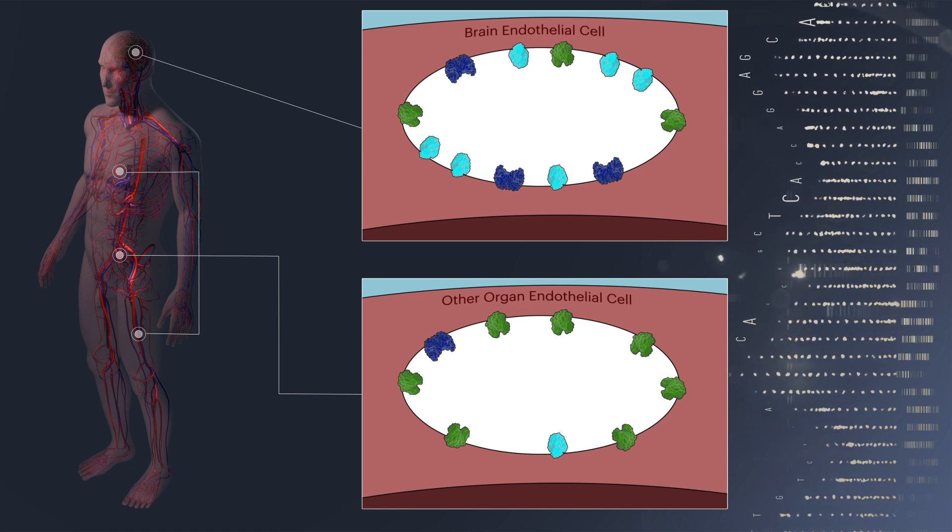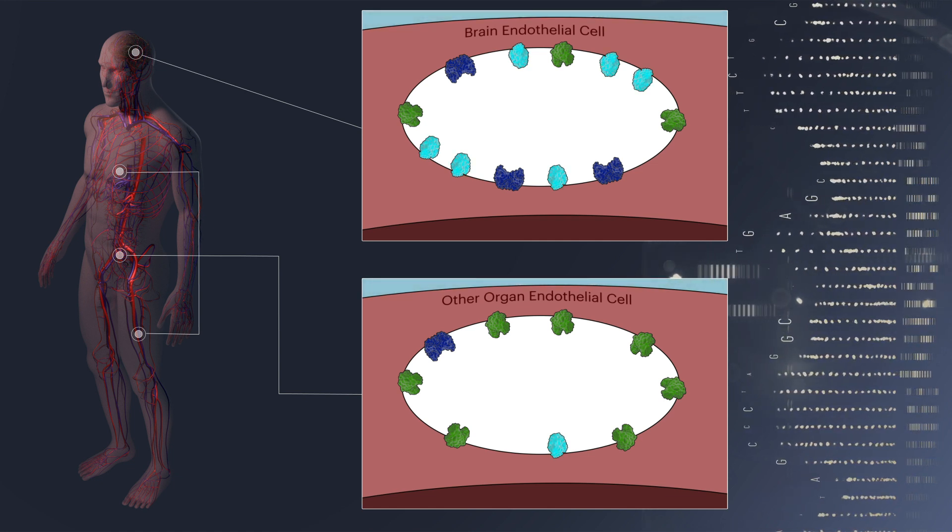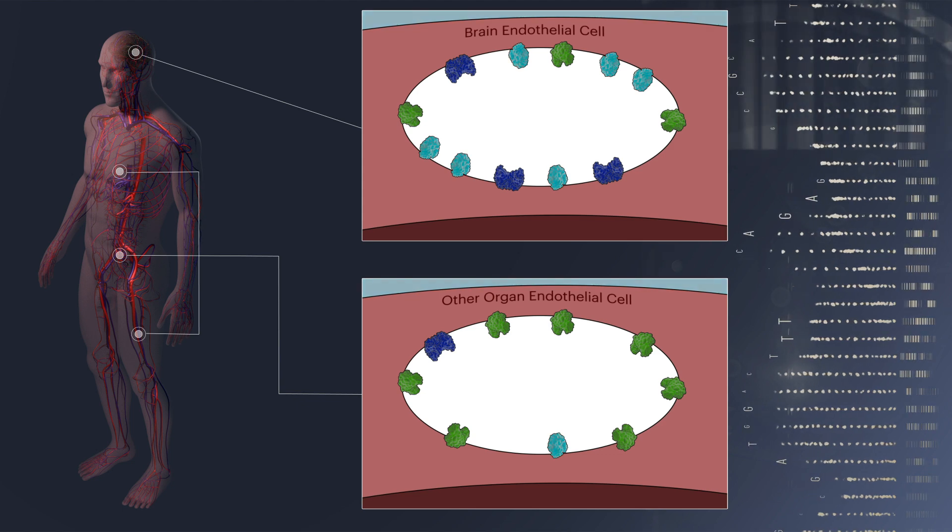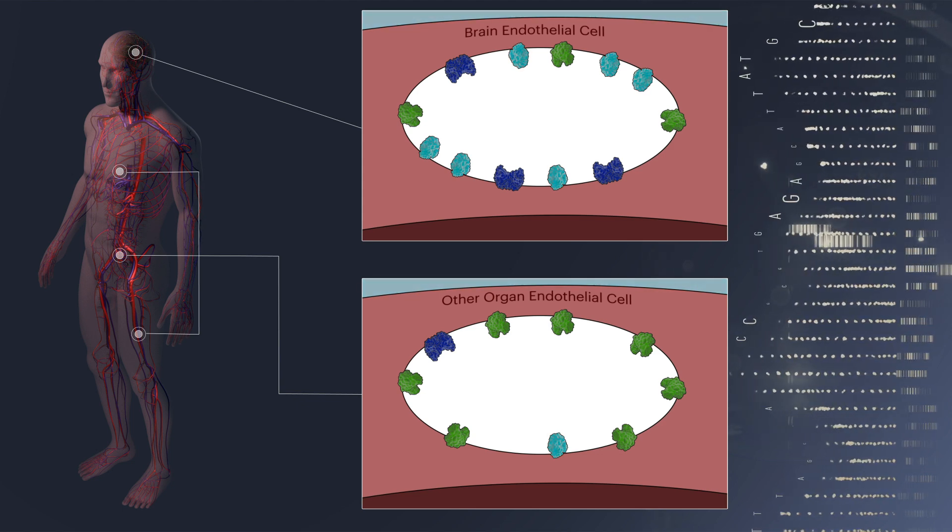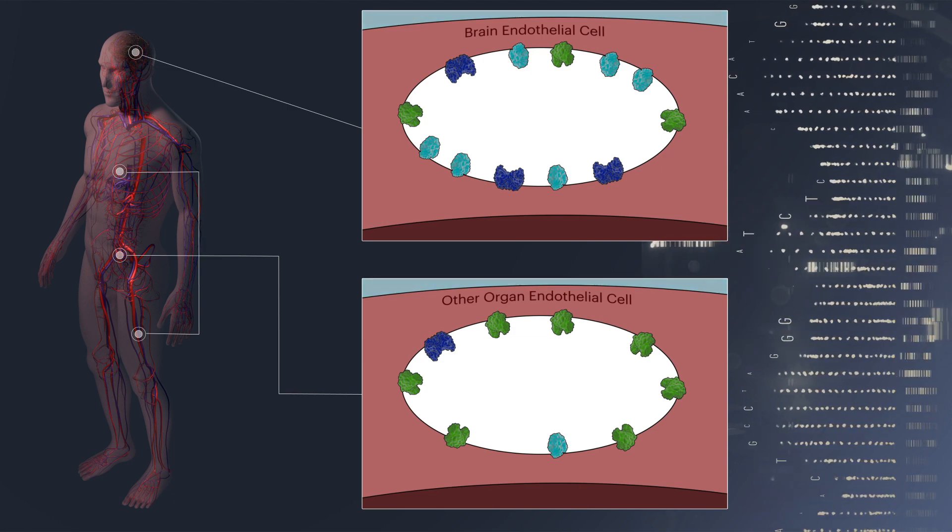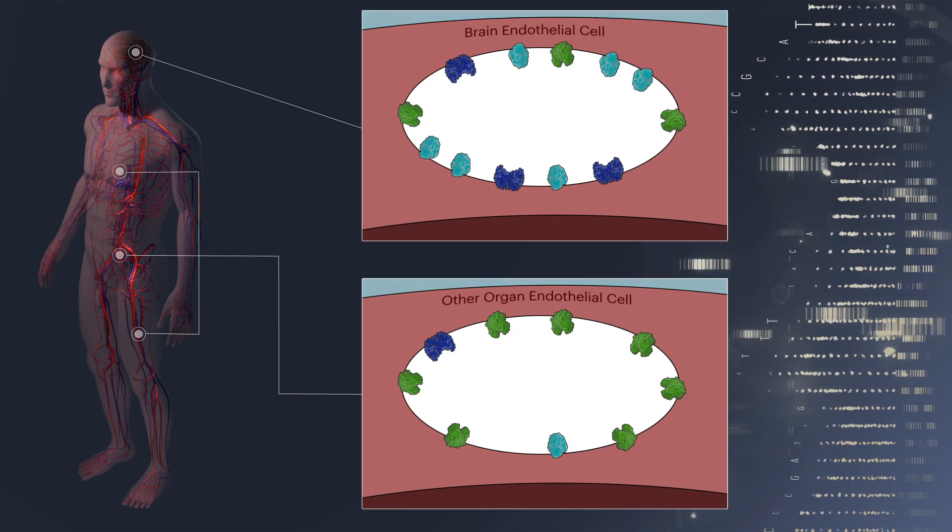To search the database for transport target candidates that are expressed at high levels in the brain endothelial cells and lower levels in the endothelial cells of other organs, such as the proteins shown here in cyan, they are developing new bioinformatic algorithms.